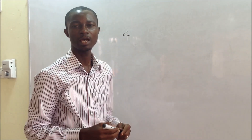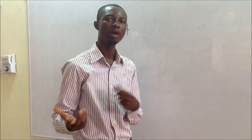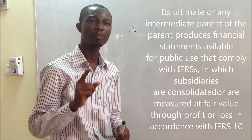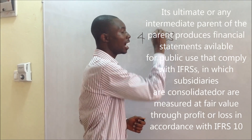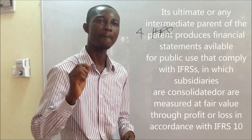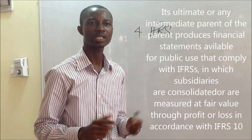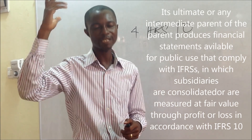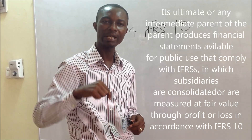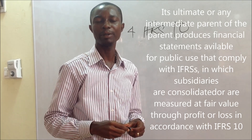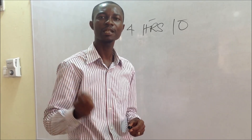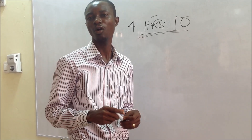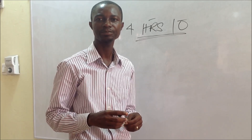The last condition required for exemption from consolidation is that the parent's ultimate or any intermediate parent produces financial statements available for public use that comply with IFRS, in which subsidiaries are consolidated or are measured at fair value through profit or loss in accordance with IFRS 10. What this means is that if there is an ultimate or intermediate parent — meaning the parent itself has a parent — and that parent prepares consolidated financial statements in compliance with IFRS 10, then the parent in question would be exempted from preparing its own consolidated financial statements.